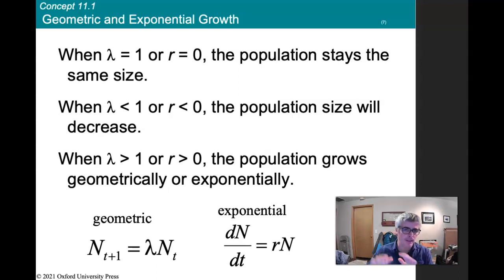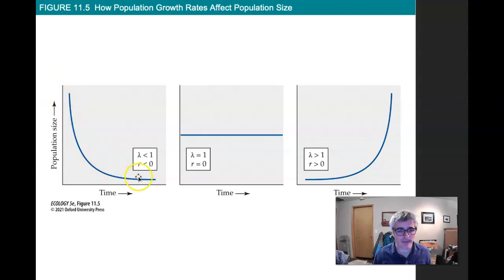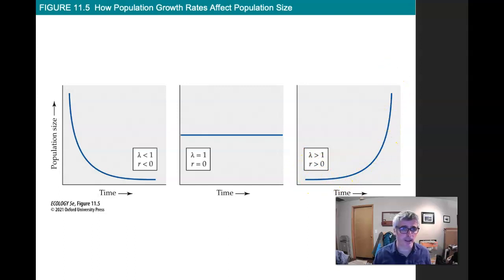So the key reference points: lambda = 1 corresponds to r = 0, representing a constant population size. The graph shows the same thing: when lambda < 1 and r < 0, the population decreases through time; when lambda = 1 and r = 0, there's no change in population; and when lambda > 1 and r > 0, the population increases through time.